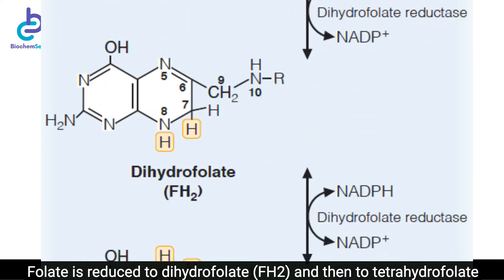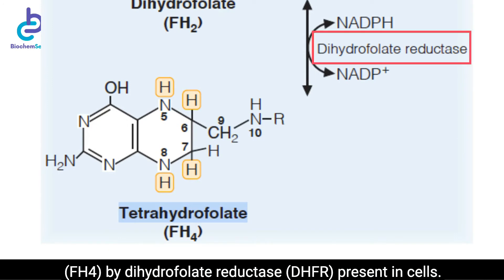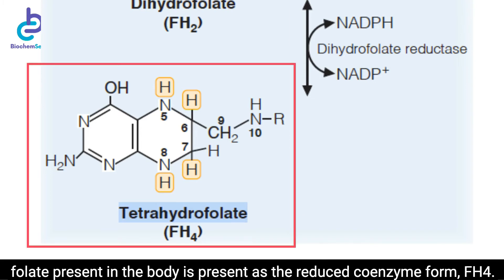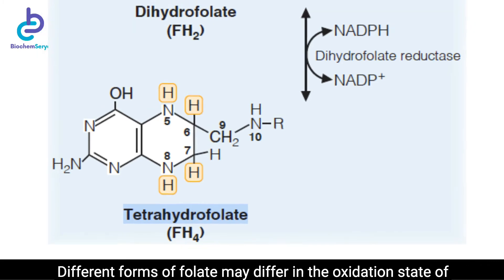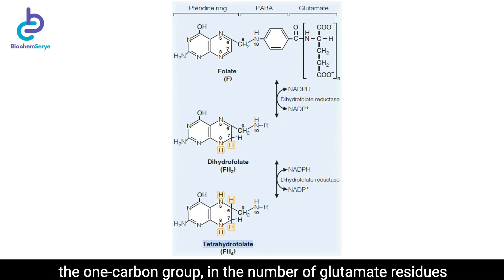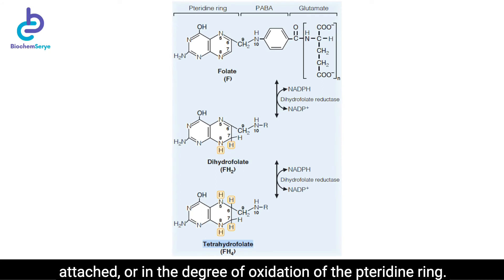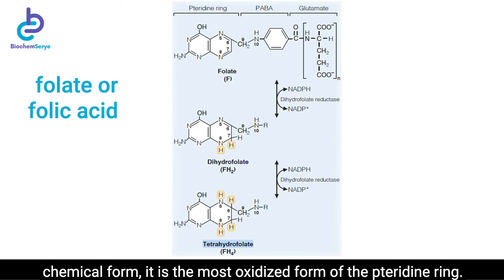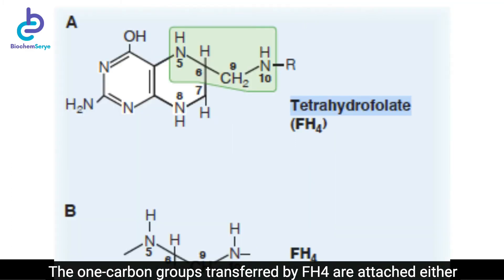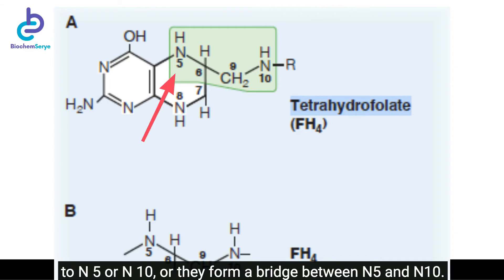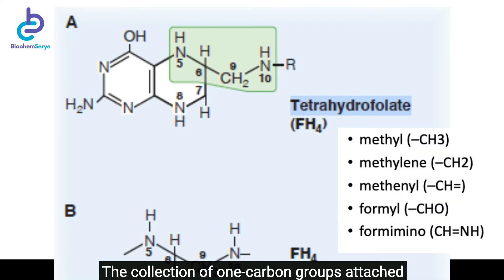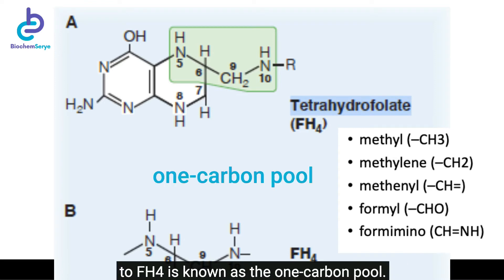Folate is reduced to dihydrofolate and then to tetrahydrofolate by dihydrofolate reductase present in cells. Reduction is the favored direction of the reaction; therefore, most of the folate present in the body is present as the reduced coenzyme form, FH4. Different forms of folate may differ in the oxidation state of the one-carbon group, in the number of glutamate residues attached, or in the degree of oxidation of the pteridine ring. When applied to a specific chemical form, folate or folic acid refers to the most oxidized form. The one-carbon groups transferred by FH4 — attached to N5, N10, or bridging N5 and N10 — are methyl, methylene, methanol, formyl, and formimino.